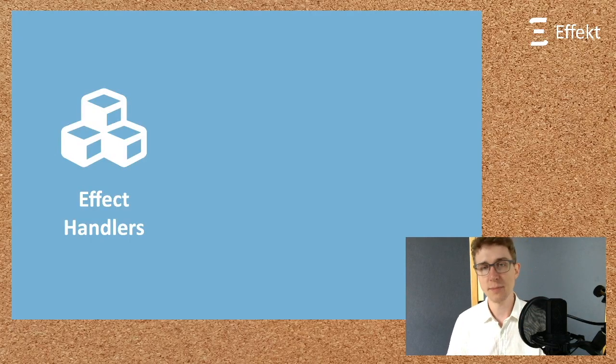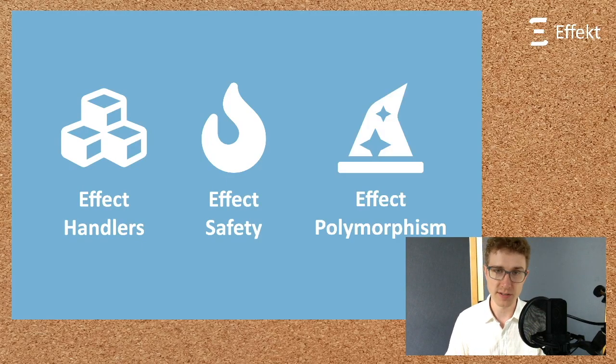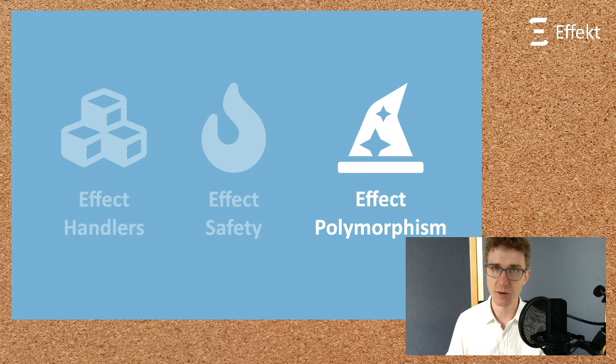This talk, like our language, is about three things. Effect handlers, a recent mechanism to structure complex control flow patterns. Effect safety, that is guaranteeing that all effects are eventually handled. Effect polymorphism, that is describing programs which are polymorphic in the used effects. While handlers and effect safety are really important, if this talk is about anything, then effect polymorphism. But what is effect polymorphism?